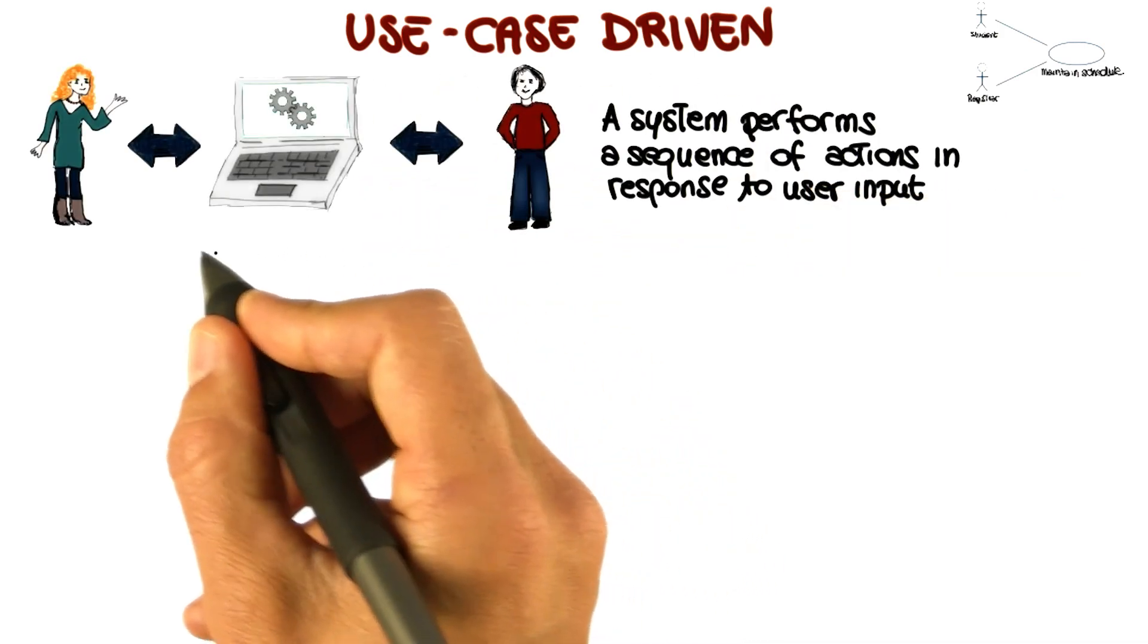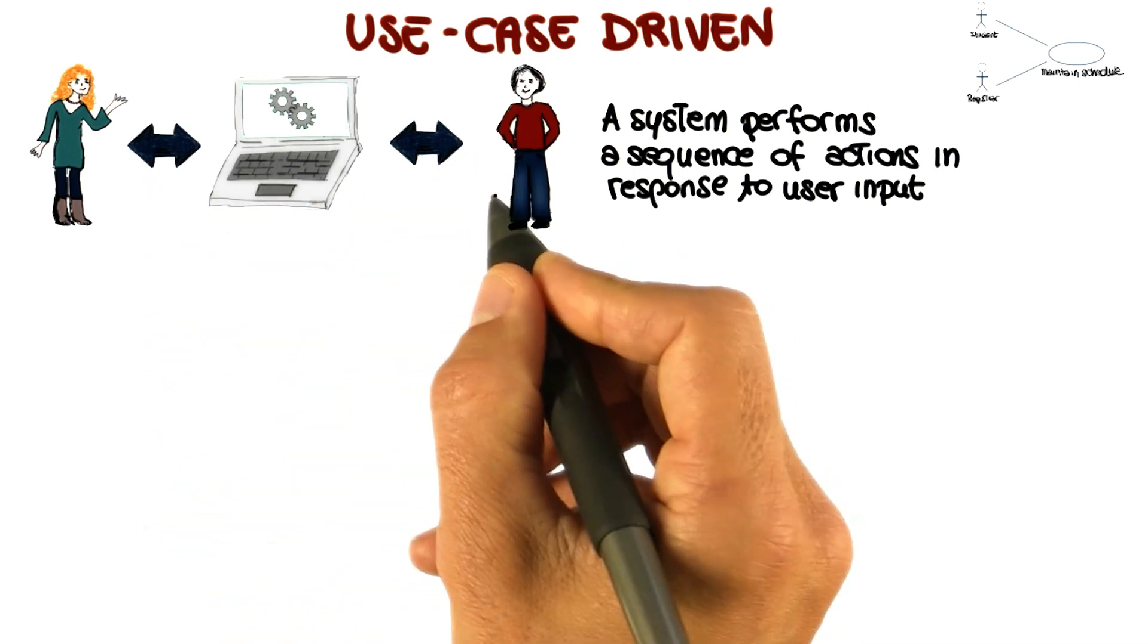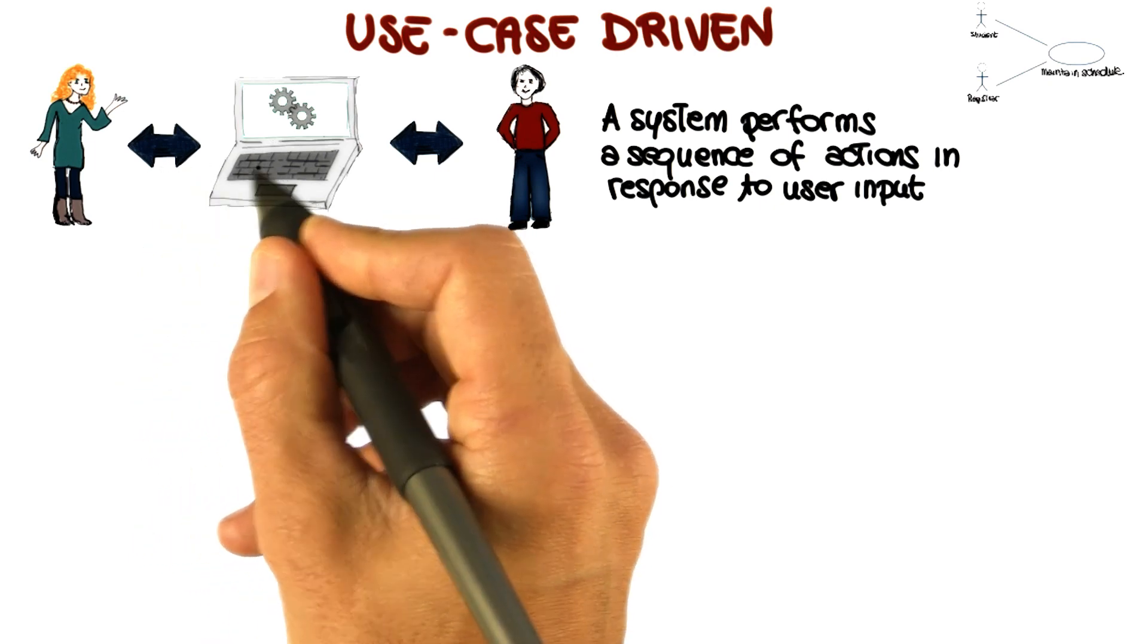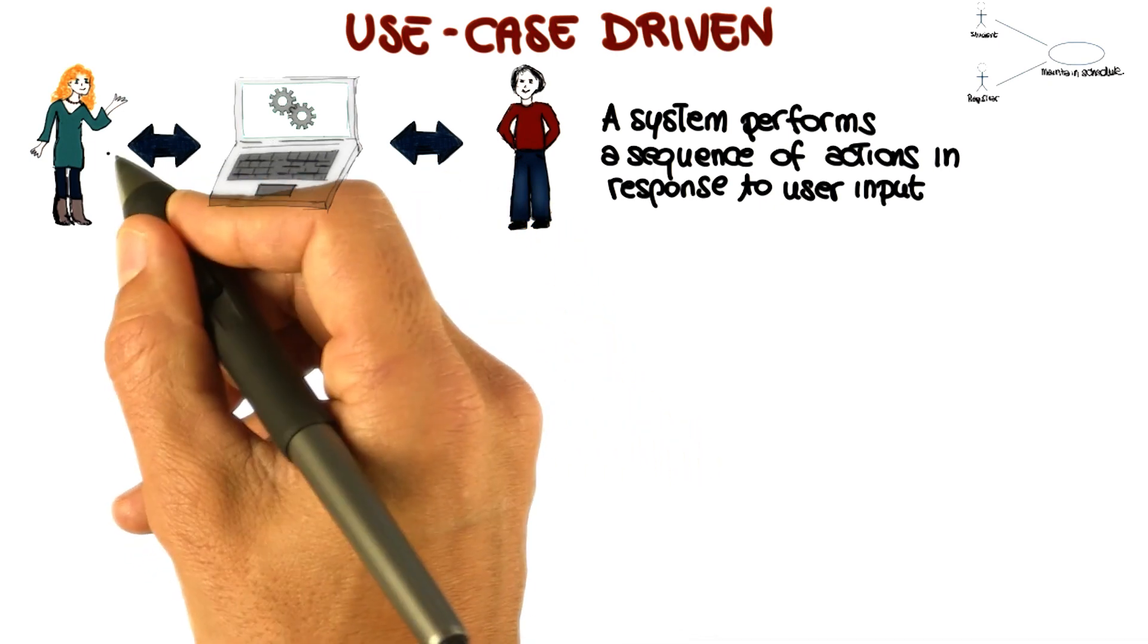Generally speaking, we can see a system as something that performs a sequence of actions in response to user inputs. The user submits some requests, requests some functionality, and the system responds to those requests.